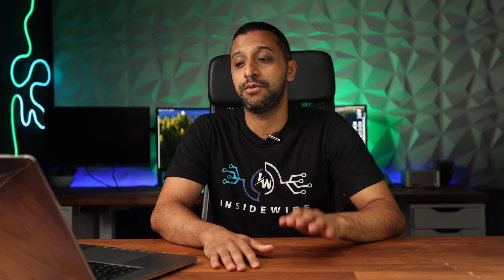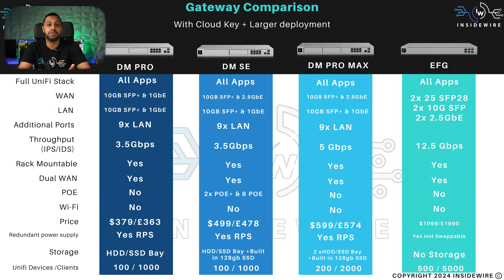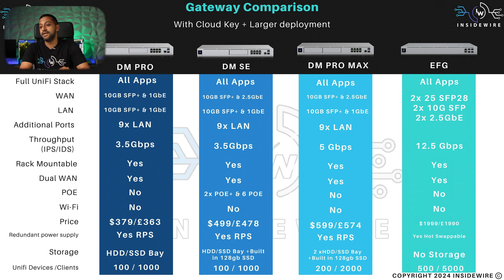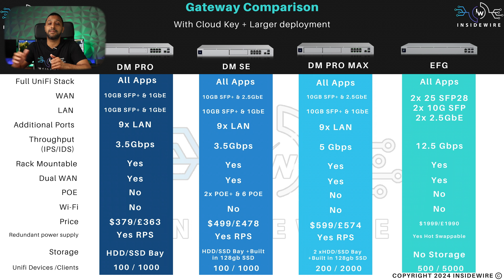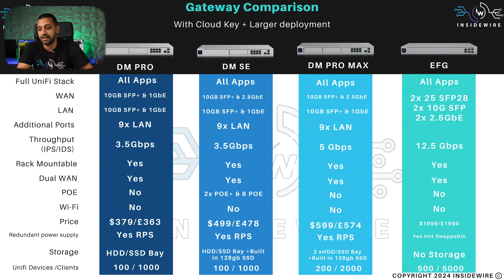Now let's look at all the rack mountable options. These are the Dream Machine Pro, the Dream Machine SE, the Dream Machine Pro Max, and the EFG — the Enterprise Fortress Gateway. I'm going to compare the three Dream Machines together to show you the upgrades between each one, and then we'll discuss the EFG.